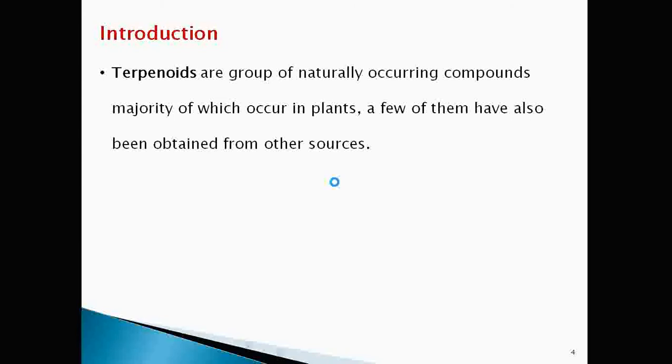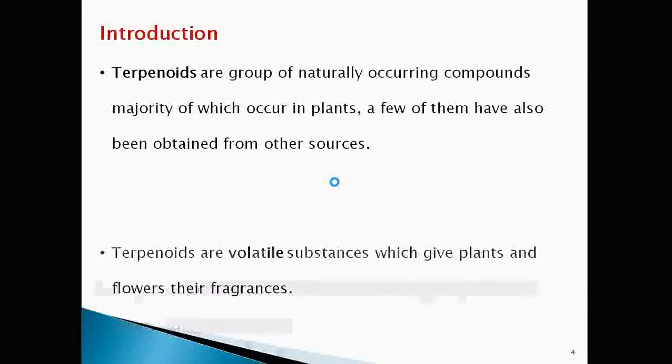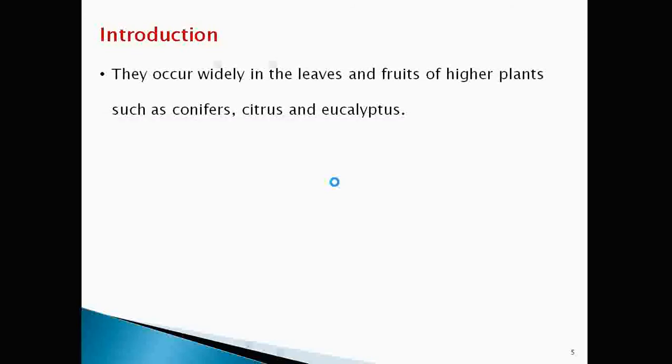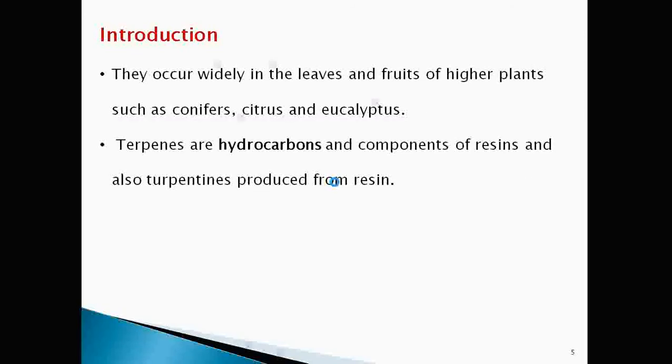Terpenoids are group of naturally occurring compounds which occur in plants. These are volatile substances which gives plants and flowers their fragrance. They occur widely in leaves and fruits of higher plants such as conifers, citrus and eucalyptus.